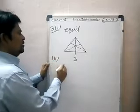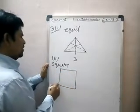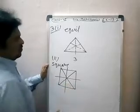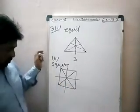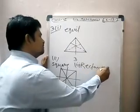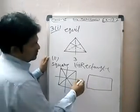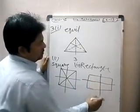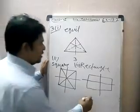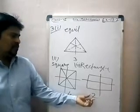Second figure is square shape. A square has four lines of symmetry possible: one, two, three, four. Third is rectangle shape. In a rectangle, first line is horizontal, second line is vertical — only two lines of symmetry possible in a rectangle. Square has four lines, rectangle has only two lines of symmetry.